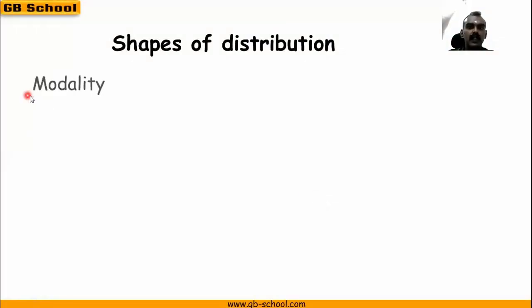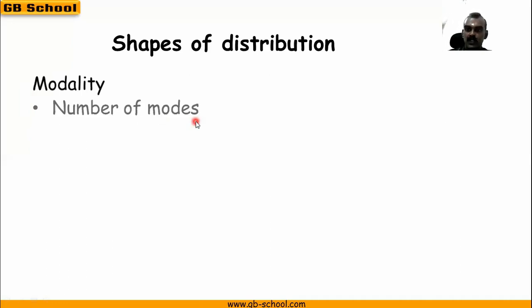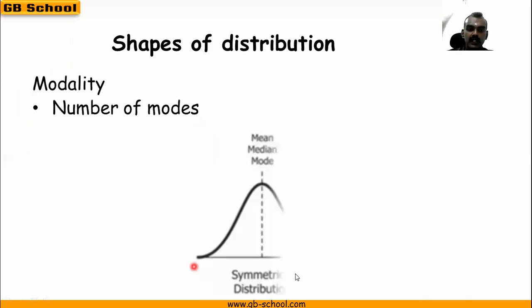Next, based on the modality — modality is nothing but the number of modes in a distribution. As we know, in a normal distribution there is only one mode, so it is unimodal.